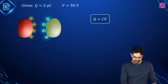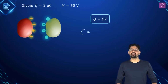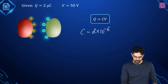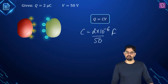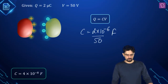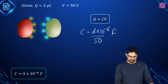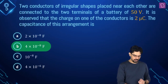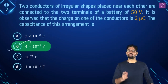Using C = Q/V, where Q is the magnitude of charge on either conductor, that is 2 microcoulomb: C = (2 × 10⁻⁶ coulomb) / 50 volt, which gives the unit as Farad. Simplifying this gives 4 × 10⁻⁸ Farad as the capacitance of this arrangement. So in this case, option B is the right answer.